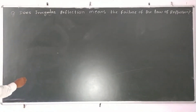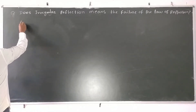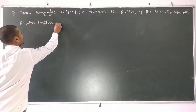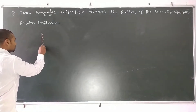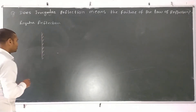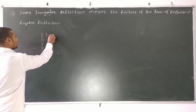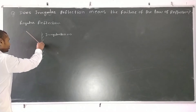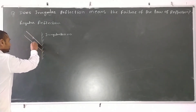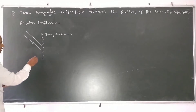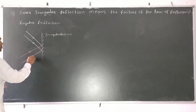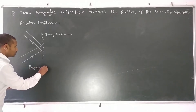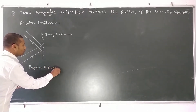First of all we have to know about regular reflection and irregular reflection. A regular reflection — suppose this is a plane mirror, a very smooth mirror with irregularity almost equal to zero. If some parallel light rays are coming to incident on the plane mirror, then after reflection they become parallel to each other. This is an example of regular reflection.